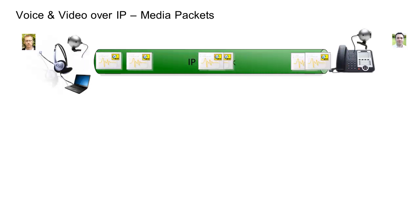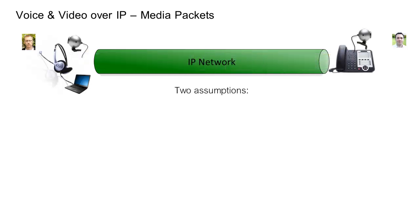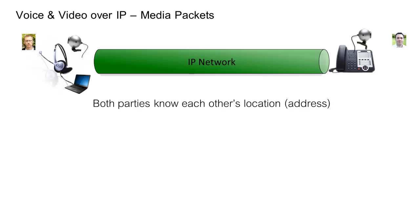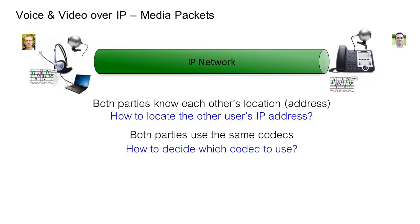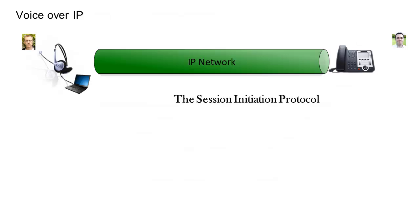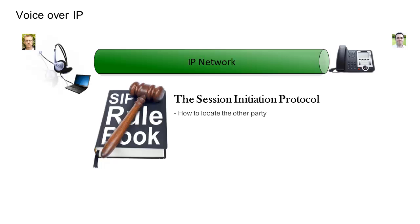For this media exchange to take place, we're assuming two important things have already been sorted: that both parties know each other's location — they know where to send their media packets — and that both parties are using the same codecs for encoding and decoding the media. So here's the big question: how do we locate or find the other user's IP address, and how do we decide which codecs to use? We need a process, some descriptions and rules that help us locate each other and agree on codecs. What we need is a protocol.